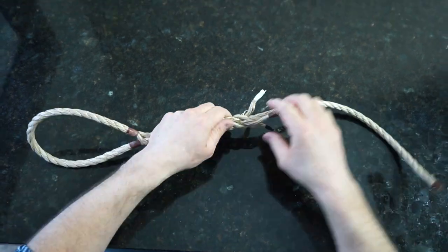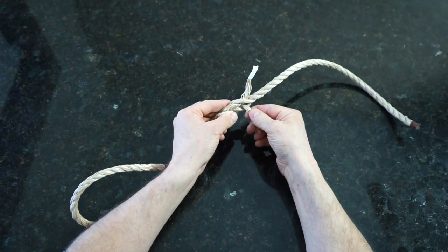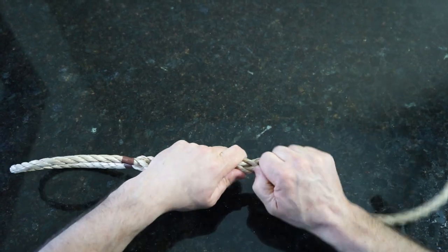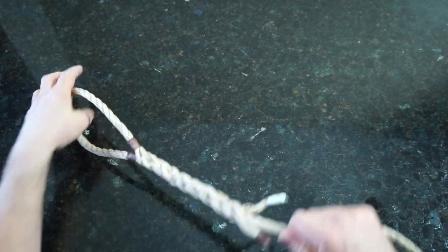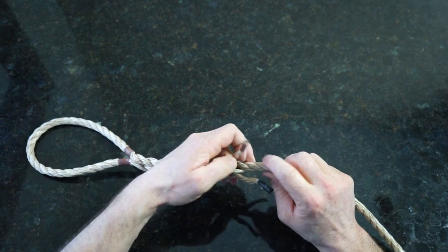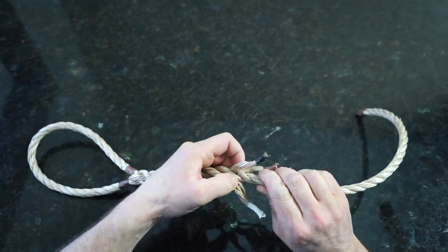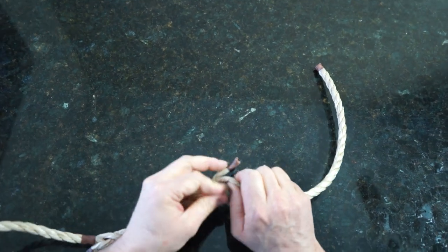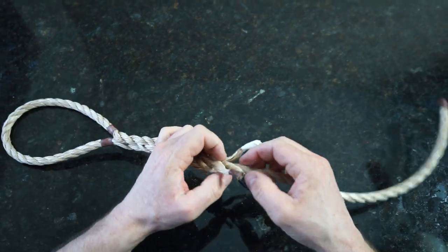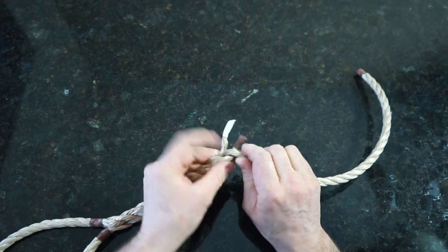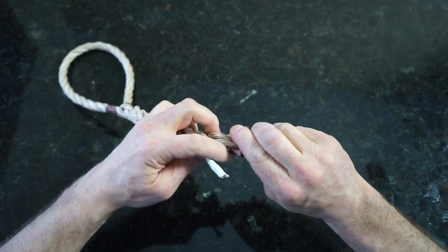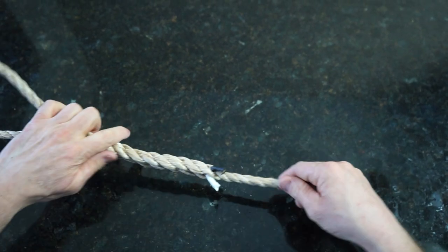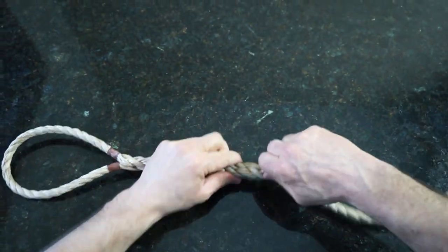And then what you can do is go ahead and tape up these ends real close to the rope and cut them off. Try to melt them if you can, so they don't come unraveled. Or you can go ahead and just continue to bury. You could do one more set of tucks if you want and just bury them. I'll just do that. I don't have a cutting tool here with me. Just like that. Those are all properly buried.